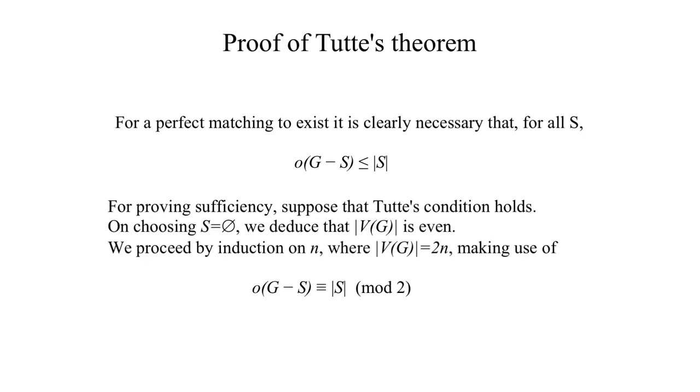For proving sufficiency, suppose that Tutte's condition holds. On choosing S as the empty set, we deduce that the number of vertices of G is even. So we proceed by induction on N.